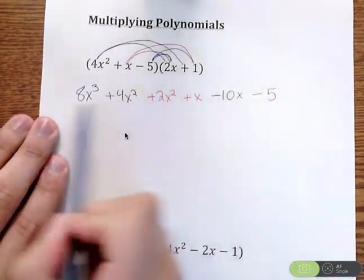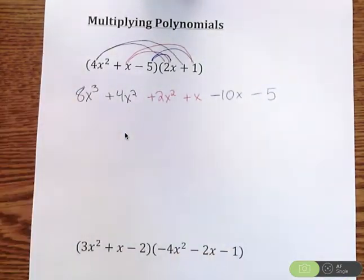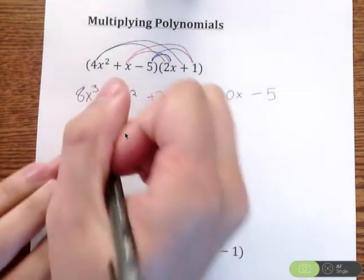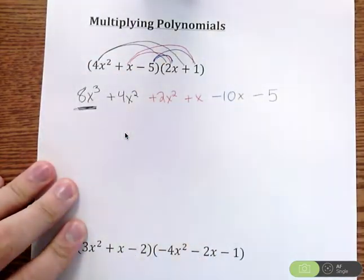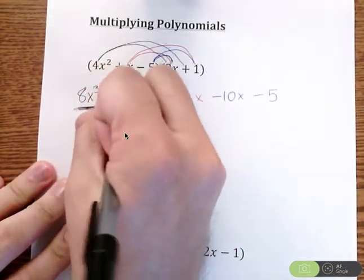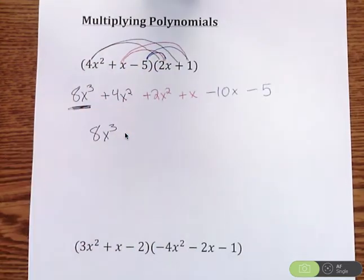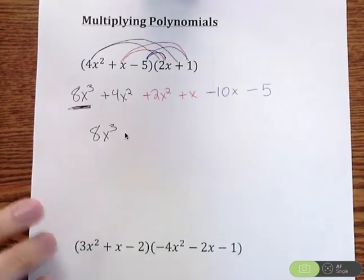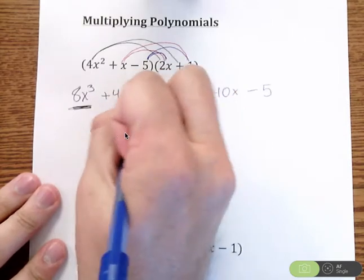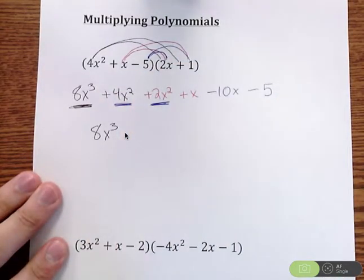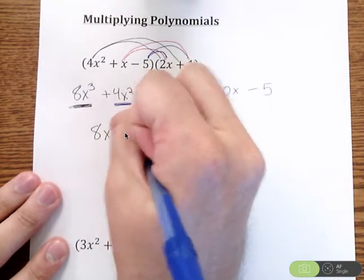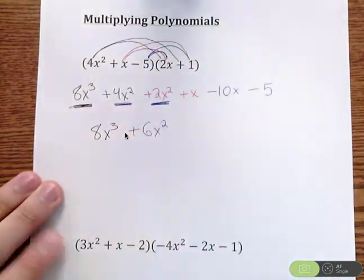Next, we're going to combine like terms. Start with the highest power, which is 8x³. Don't have any others, so we're left with 8x³. Then go to the next lowest power. I have 4x² and 2x². 4x² plus 2x² is 6x².